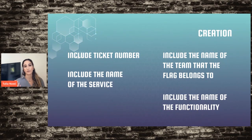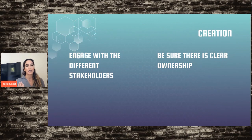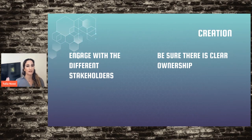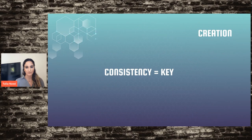You should engage with different stakeholders to define something that makes sense for all teammates, and make sure there's clear ownership when you create the flag to reduce friction later. If you don't have a concrete naming convention, it's like when your mom goes through every sibling's name before correctly identifying you. You want to look at a flag and immediately know what it's doing. Consistency is key — keep the same convention throughout the entire project.